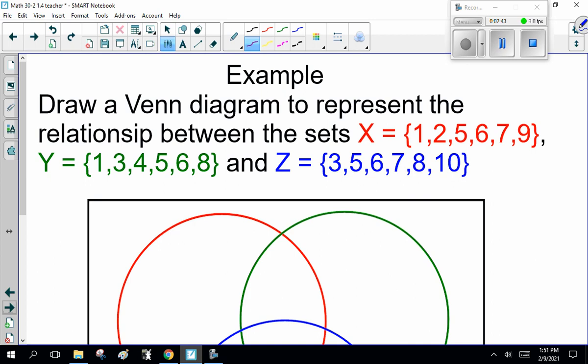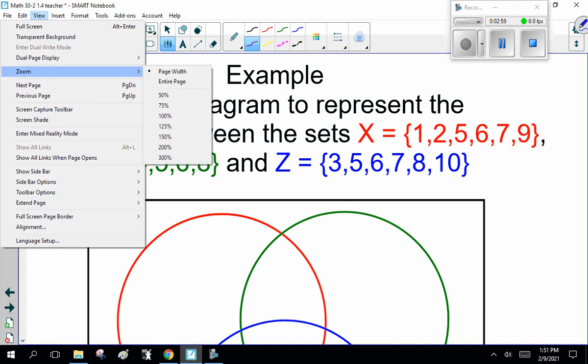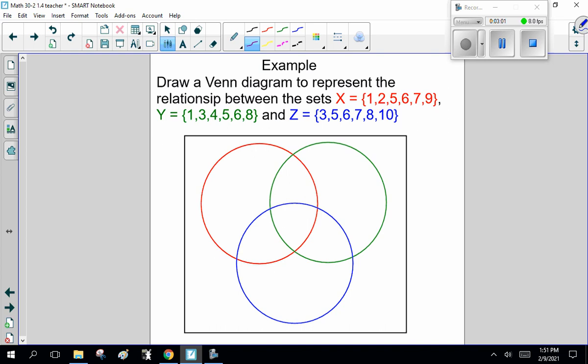Here's an example I need you guys to work on. I want you to draw a Venn diagram to represent the relationship between the sets X: {1, 2, 3, 5, 6, 7, 9}, Y: {1, 3, 4, 5, 6, 8}, and Z: {3, 5, 6, 7, 8, 10}. This is X, this is Y, this is Z. Now, pause the recording, put the numbers in, come back and compare it.